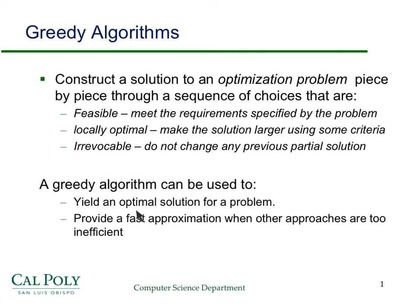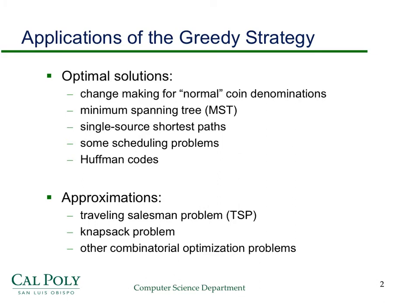Greedy algorithms have two main uses. They yield optimal solutions for problems. Or, in other cases where they don't give an optimal solution, they provide a fast approximation when other approaches are too inefficient. Some examples include change making for normal coin denominations like U.S. currency, the minimum spanning tree problem, shortest paths, some scheduling problems, and Huffman codes — those are optimal codes under certain criteria. For approximations, examples include the traveling salesperson problem, the knapsack problem, and other combinatorial optimization problems.